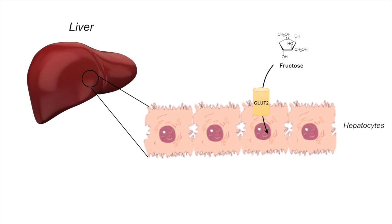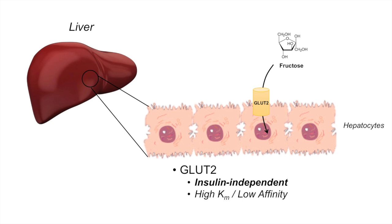We're talking about GLUT2 a lot, so what is the difference between GLUT2 and some of the other glucose transporters? The most important thing to remember is that GLUT2 is insulin-independent — it does not require insulin to transport glucose or fructose. It also has a high Michaelis-Menten constant, meaning a low affinity, so it only absorbs glucose or fructose when those levels are very high. GLUT2 is present in the liver, pancreas, and intestines.